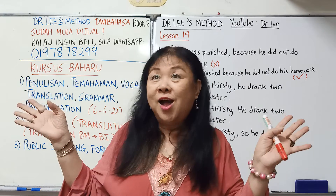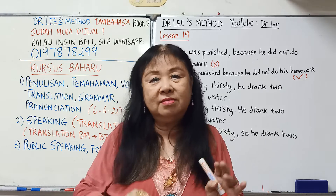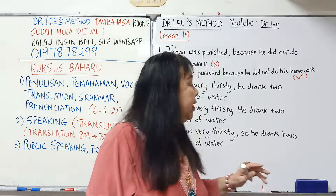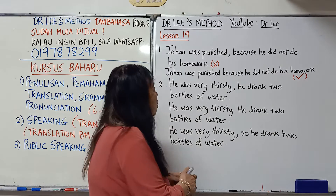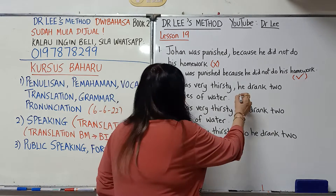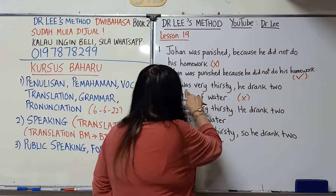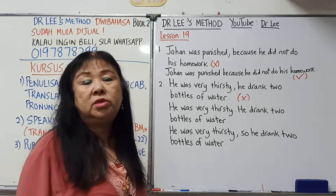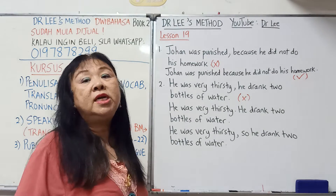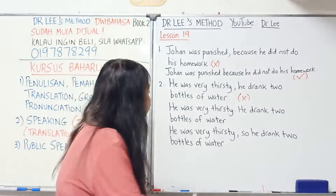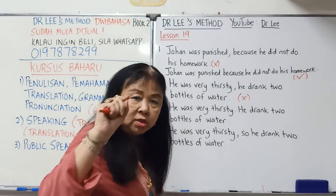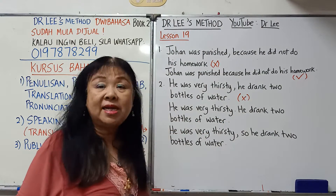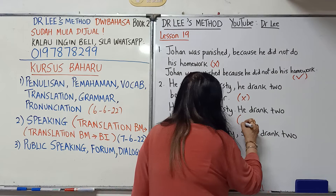所以英文不可以像华语那样好长才一个圈子。这个造句是错的，因为 "he was very thirsty" 已经是完整的句子了，所以你必须放一个句号。然后 "He drank two glasses of water" 这个 H 必须是大写。这样才是对的。